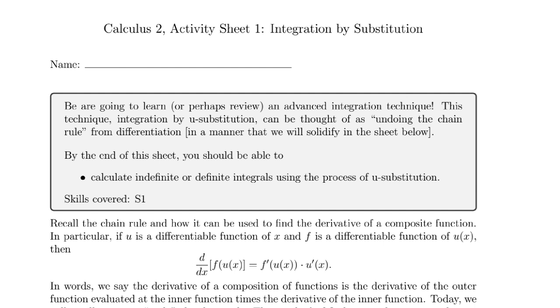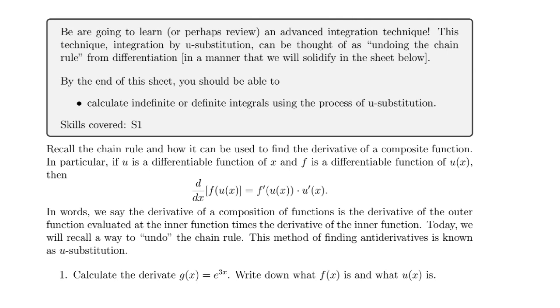And this technique can be thought of as a version of undoing the chain rule. So let's remember, let's start by remembering what the chain rule is. The chain rule is exactly this expression that's written right here. It says that if we are taking the derivative of a function that is a composition, so if we have two functions f and u, we create a composition function f of u of x.